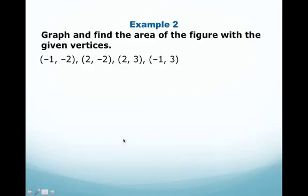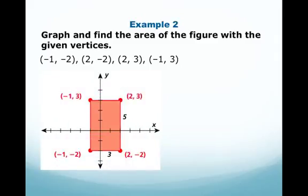Example 2: Graph and find the area of the figure with the given vertices. So first of all, we're going to graph these points: negative 1, negative 2; 2, negative 2; 2, 3; and negative 1, 3. When you do this and you connect the dots, you'll have a rectangle with a base of 3 and a height of 5.